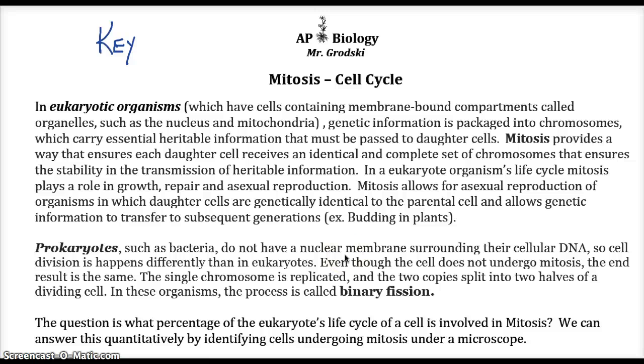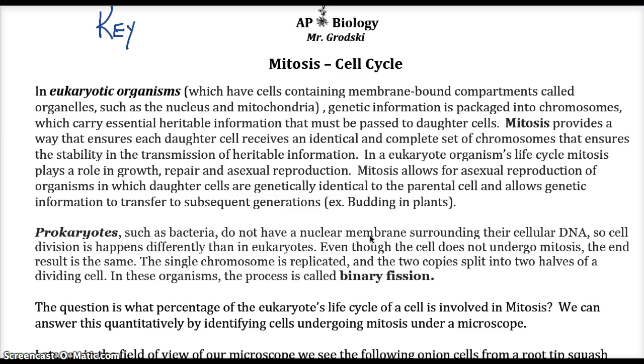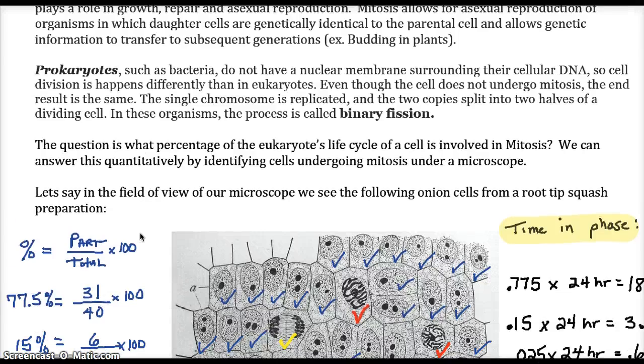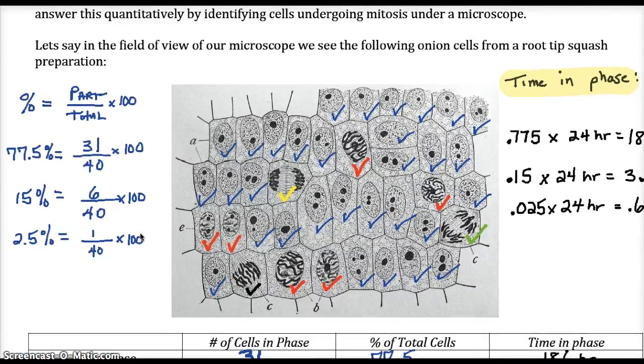We're talking about mitosis in the cell cycle, and we're using the onion root tip squash method to gain an understanding of this and looking at the number of cells that are actually undergoing mitosis. We can see from the data that we collect either through our microscopes or these examples.